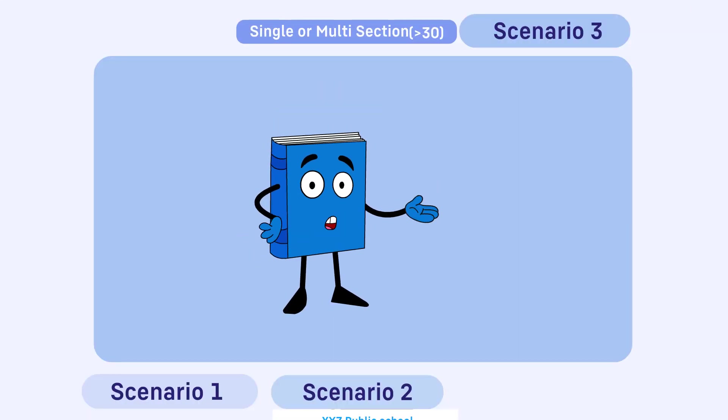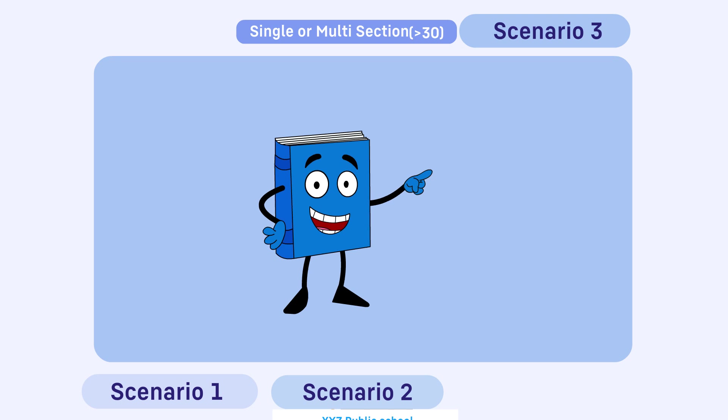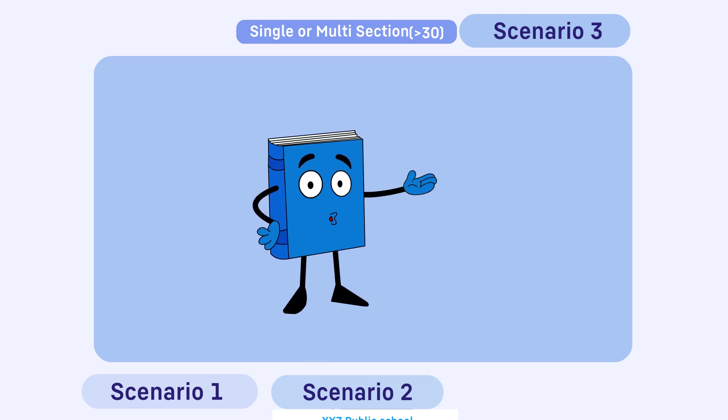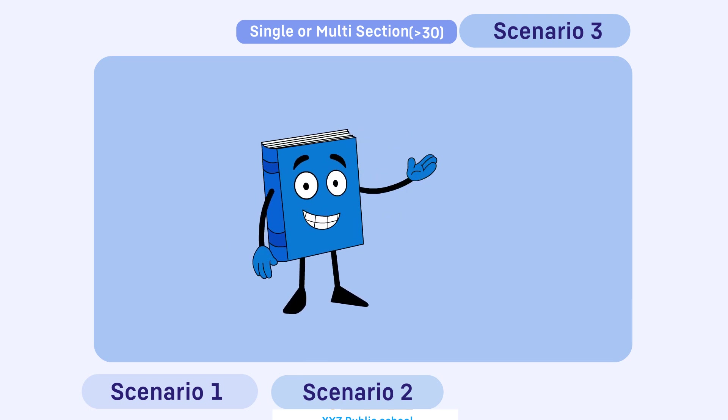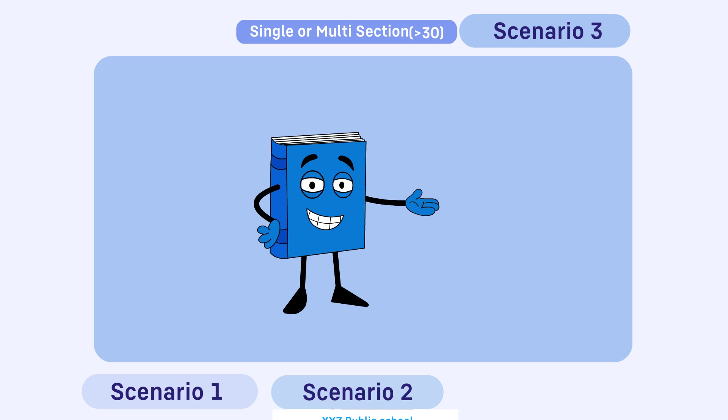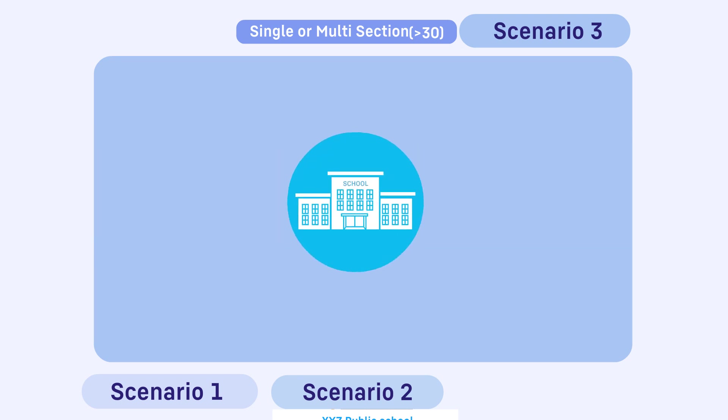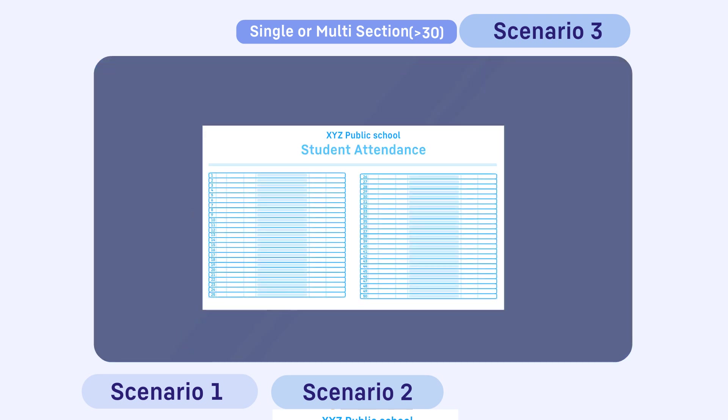Scenario 3. Last but not the least, there is a third scenario where after selecting the section, either in a single section school or multi-section school, we end up with more than 30 students. Let's assume in XYZ public school, the section being surveyed has 50 students.